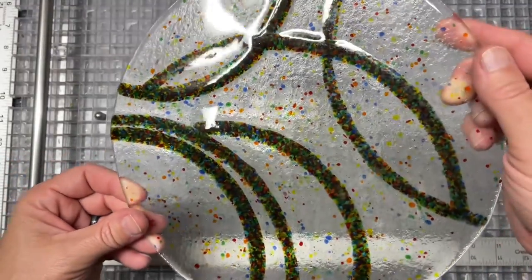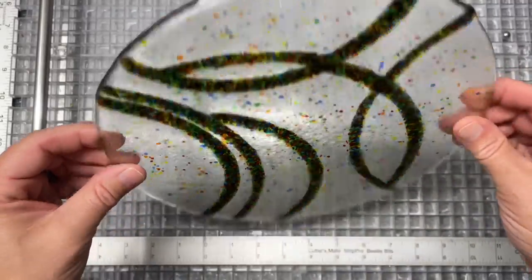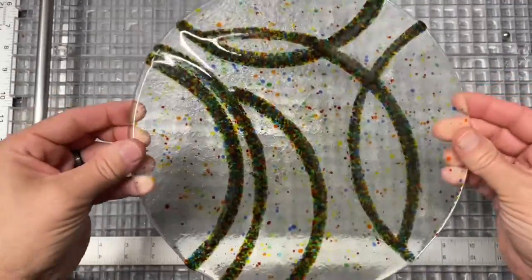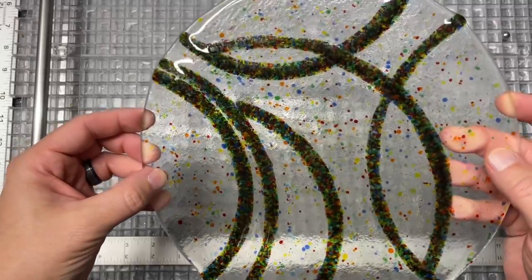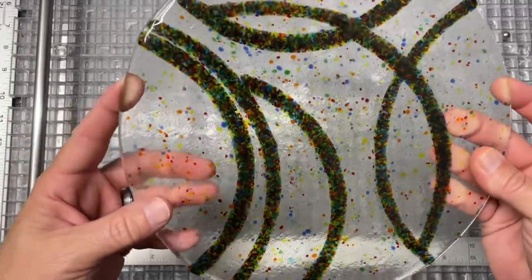Looking at it, it looks rather dark on the video, but in person it looks pretty cool—pretty sweet. So I'm gonna do that cold working, then I'll do a fire polish, and then I will slump it.